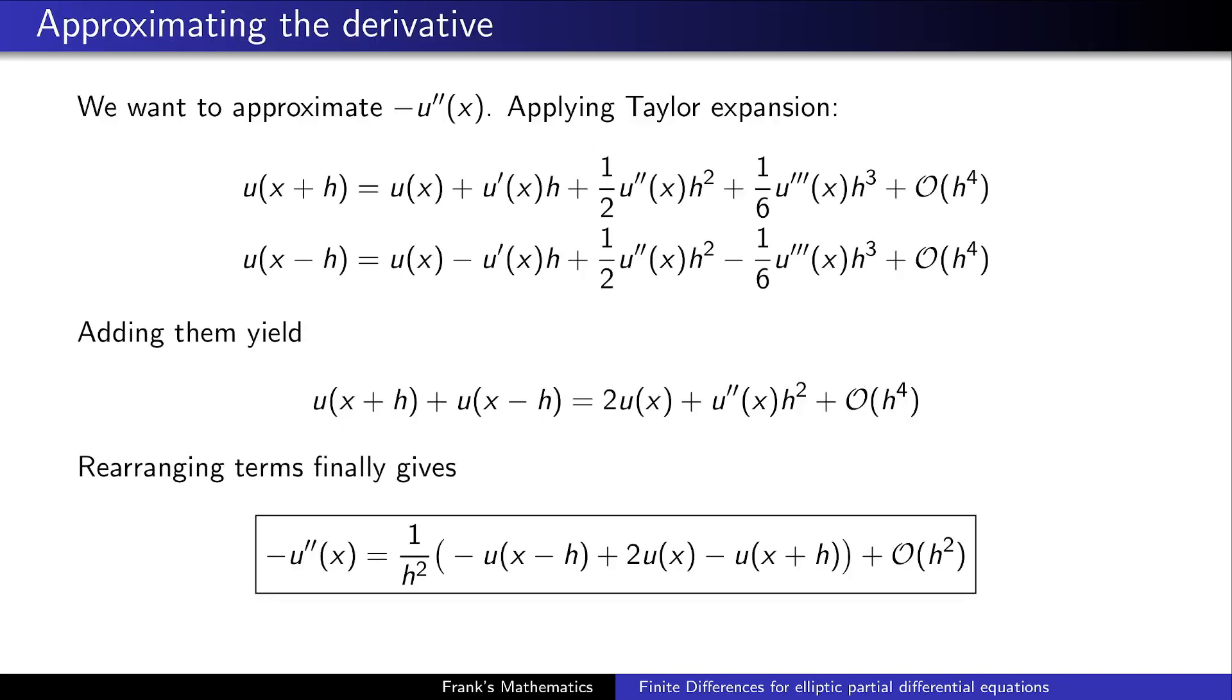The first thing we want to do is we want to get rid of the second derivative of the function u because we do not want to deal with second derivatives. The trick here is to apply Taylor expansion twice. We first apply it to u at the point x plus h where h is some offset, and second we apply it to u at the point x minus h. If you look closely you'll see we have a different sign here which is nice because if we add them these terms drop out. We will end up with this expression which contains only evaluations of u and of the second derivative of u. So rearranging this, bringing u double prime to the other side, we'll end up with an approximation to the second derivative of u which is nice.